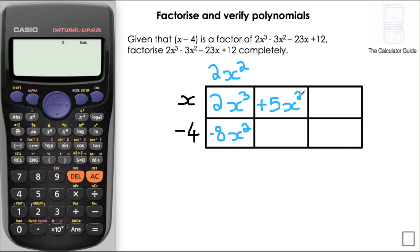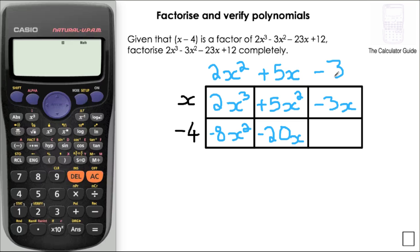I add 5x squared to the second column. What do I need to multiply x by to give 5x squared? That's plus 5x. The bottom cell gives minus 4 times 5x, which is minus 20x. Comparing that to minus 23x in the polynomial, I need to take away another 3x. I'd need to multiply x by minus 3. Then minus 3 times minus 4 gives plus 12, which matches the last term — so no remainder, as expected with x minus 4 as a factor.